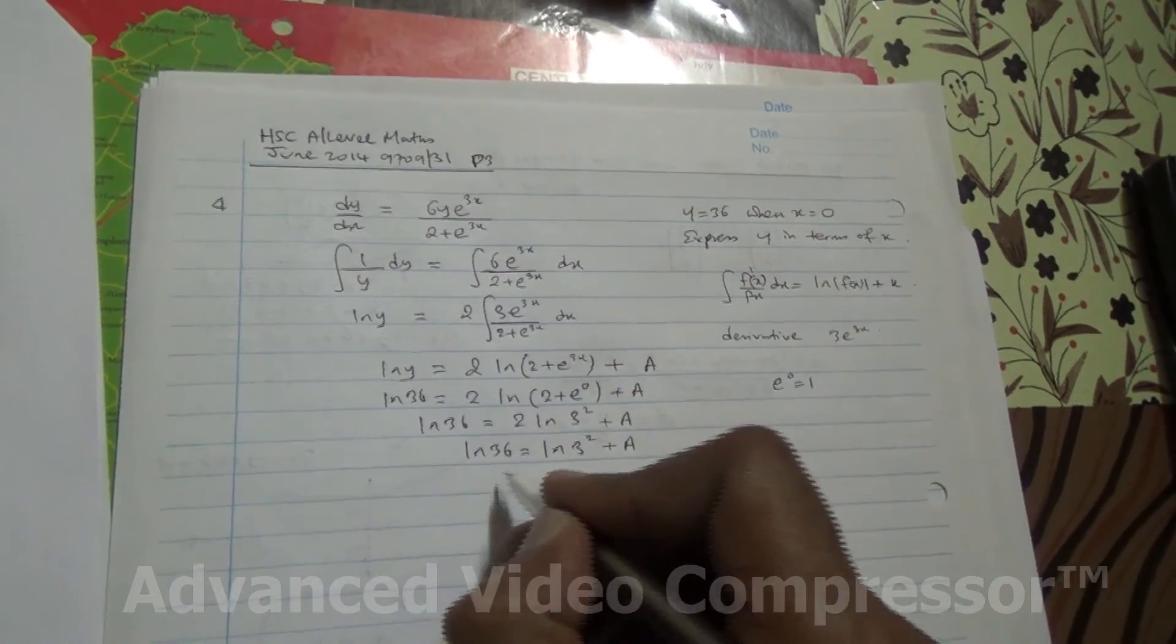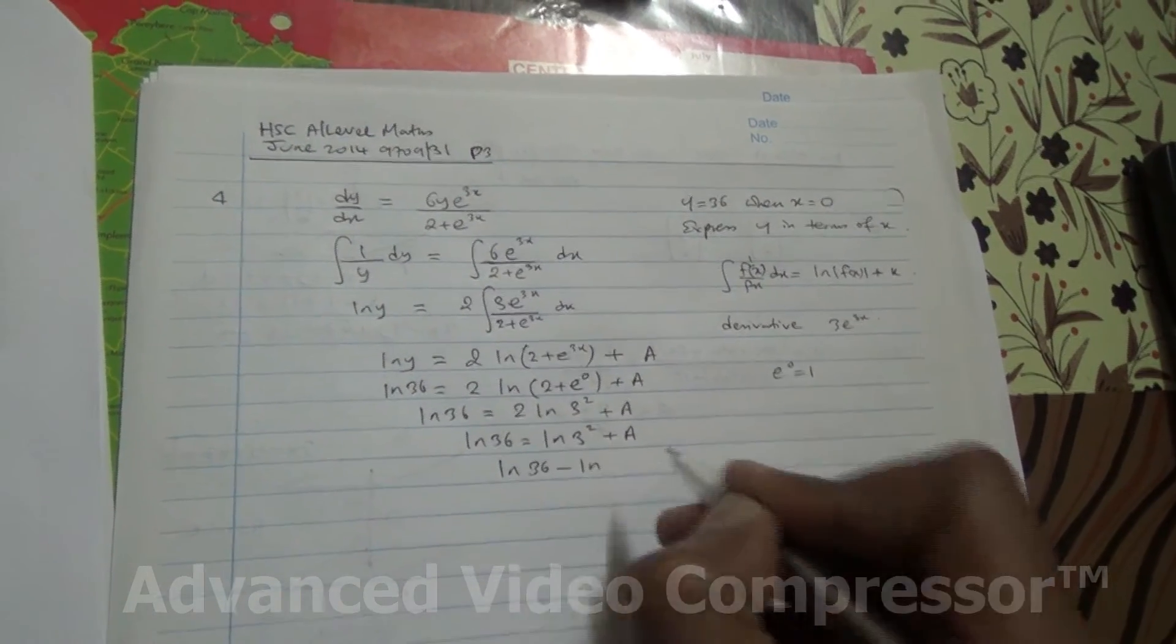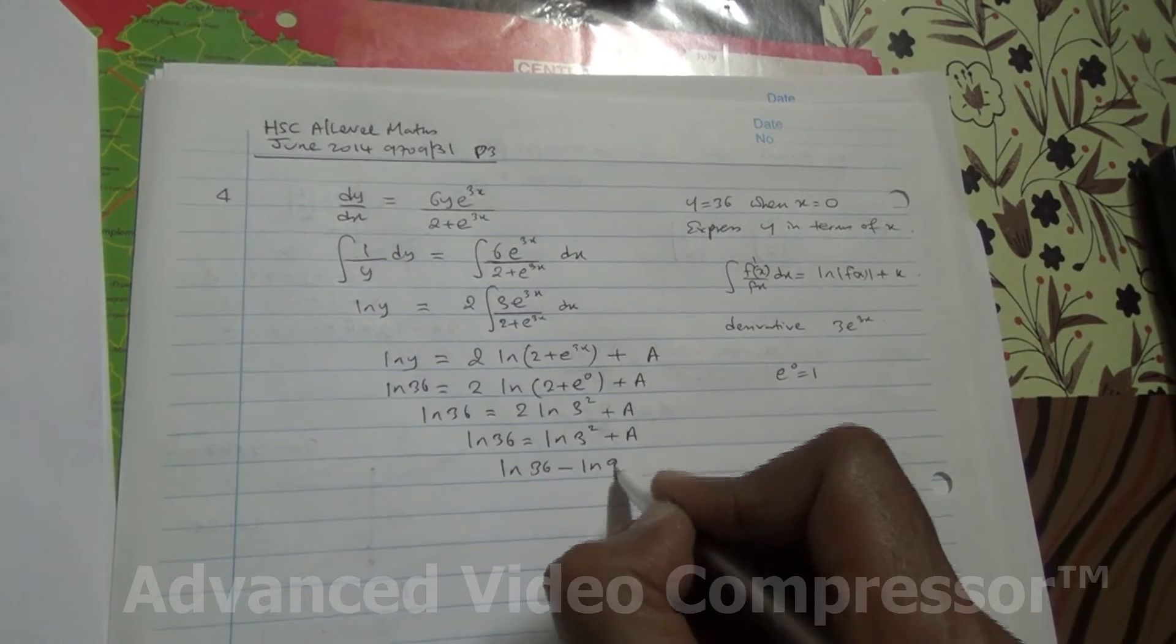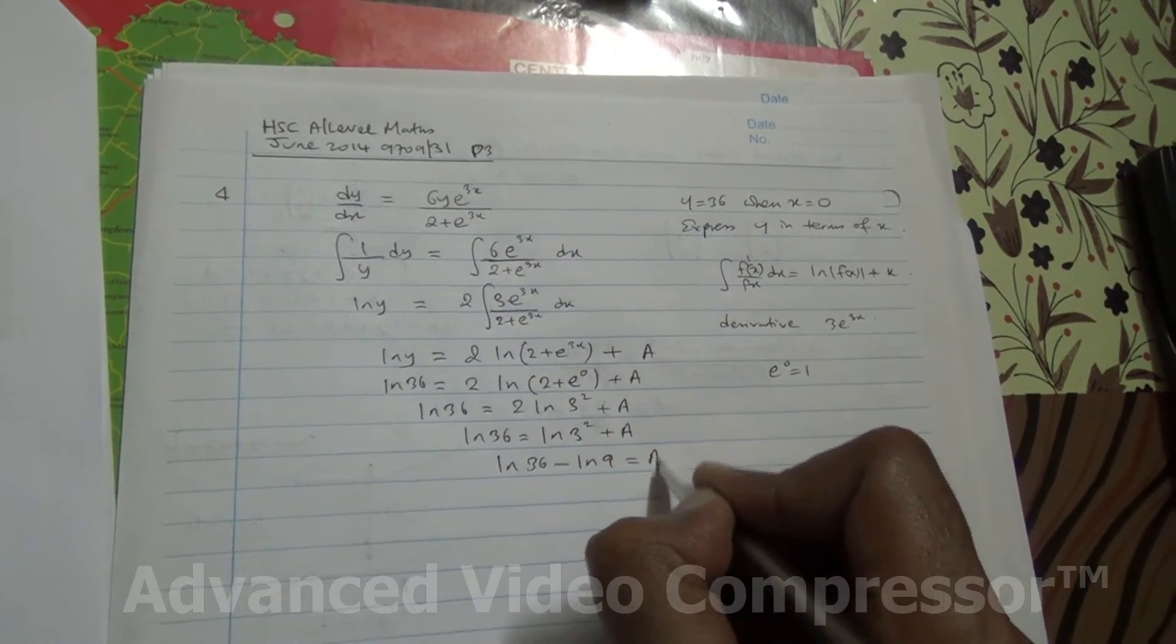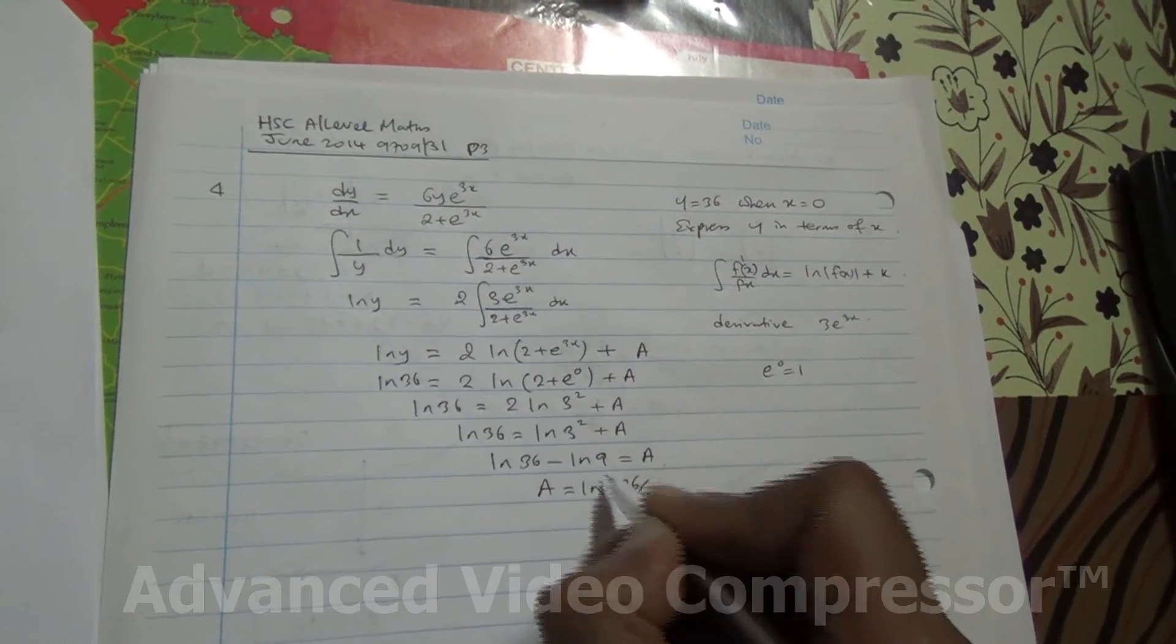So, you can see this on the other side, and that's going to become ln 36 minus ln 3 to the square, which is ln 9, is equal to a, and therefore,